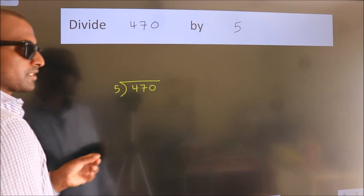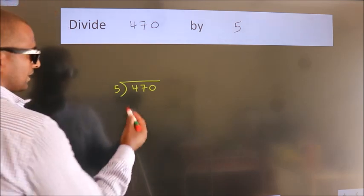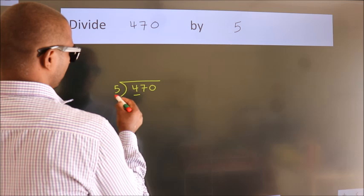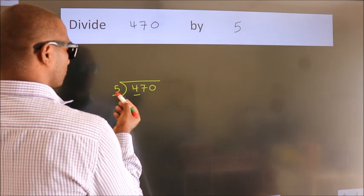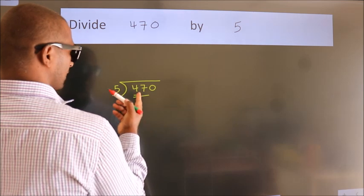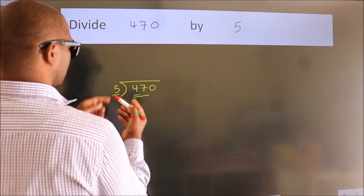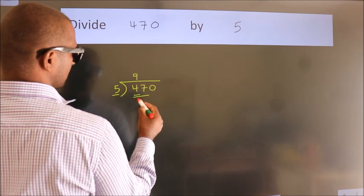This is step 1. Next, here we have 4, here 5. 4 is smaller than 5. So we should take two numbers, 47. A number close to 47 in the 5 table is 5 nines, 45.